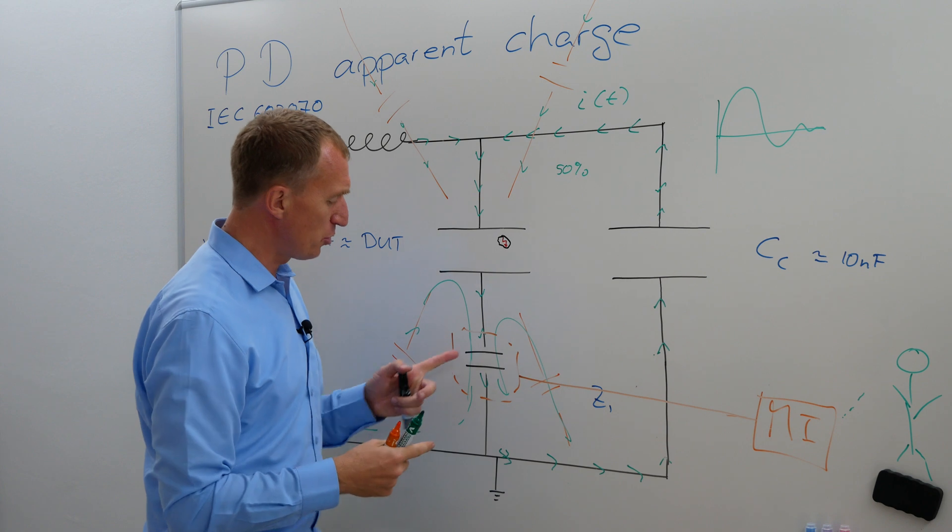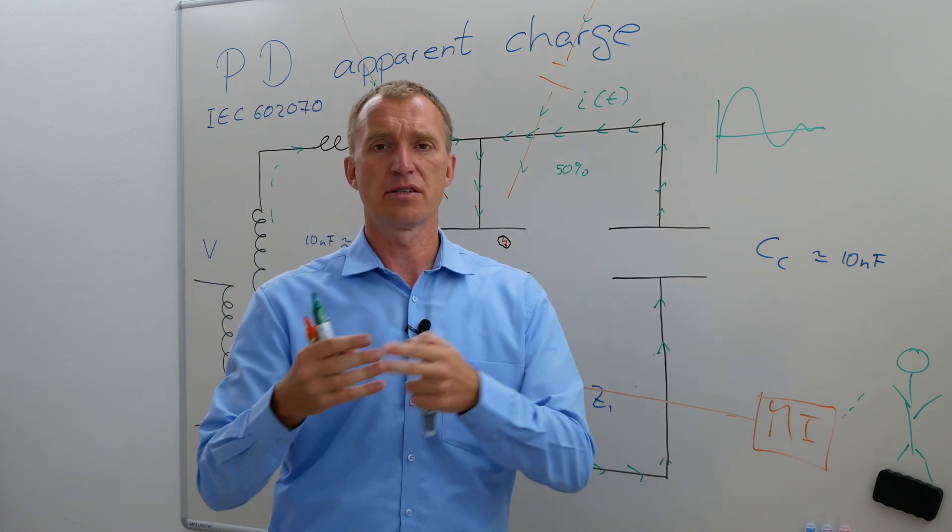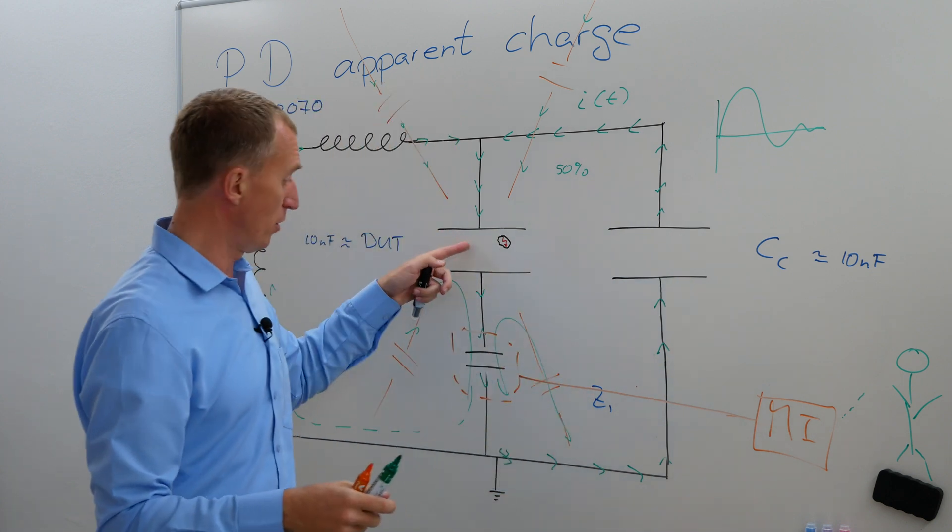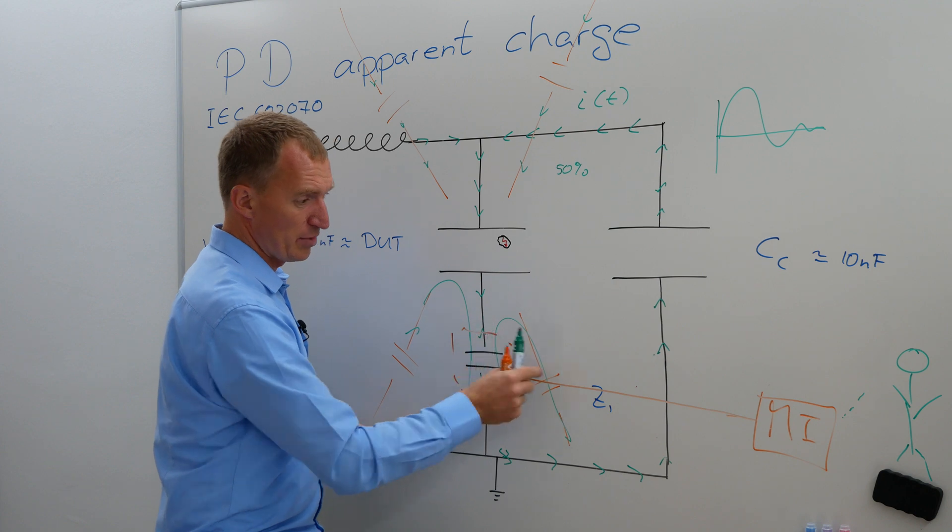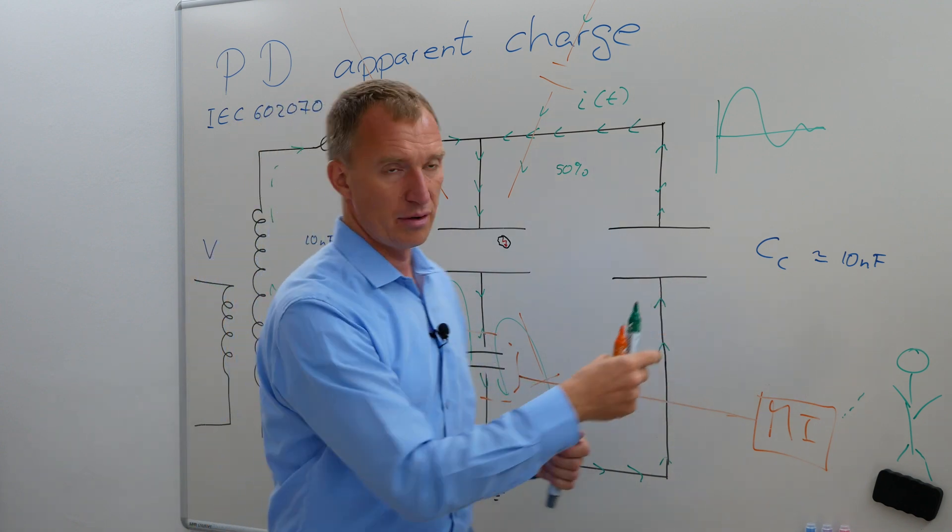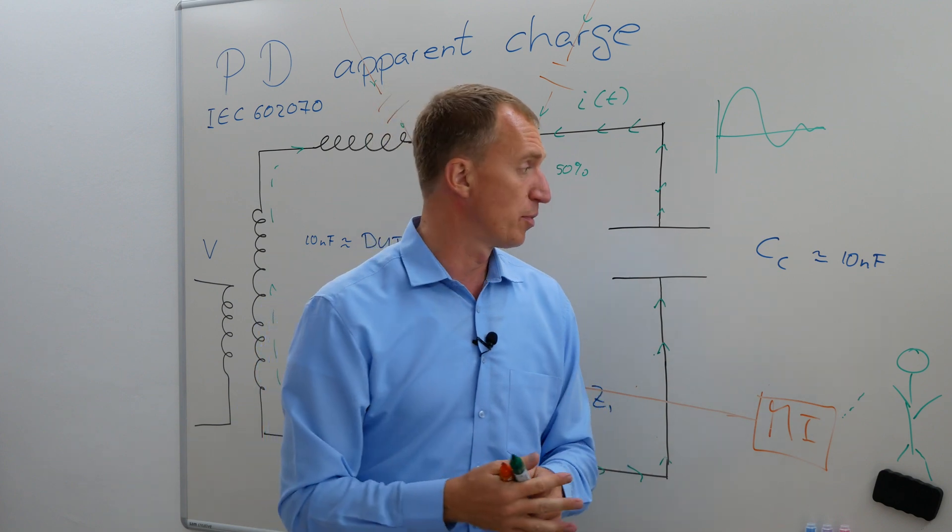There is another issue why we usually don't do that and this is that our device under test usually has different capacitance all of the time. This however, needs to be a capacitive divider and the voltage value that comes out of here needs to be in the area that our measuring instrument would be able to take and actually to measure.